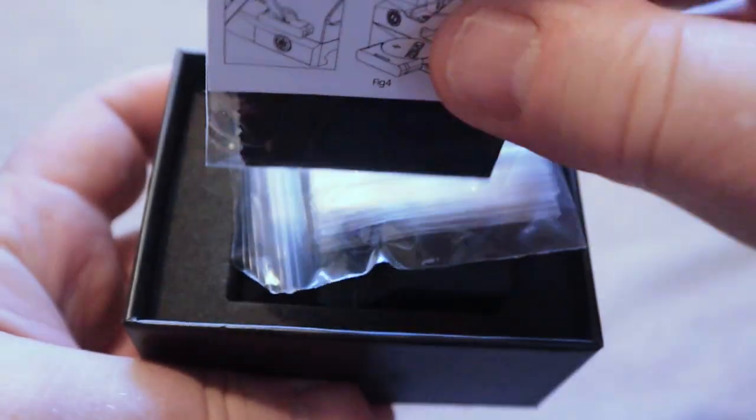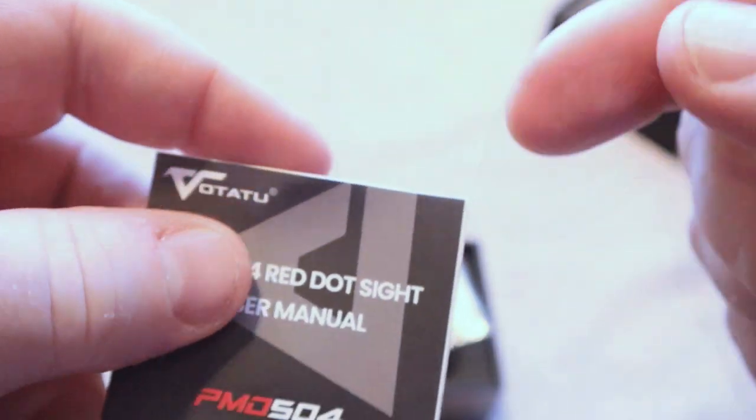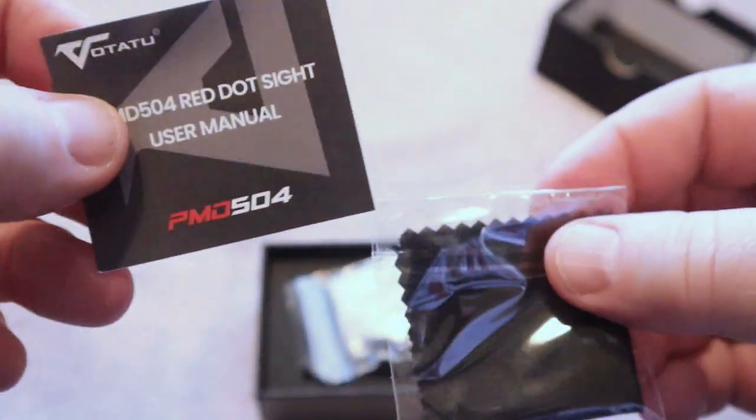We have our literature here that gives you a little bit of information about the red dot as far as the adjustments, things like that. You can see here, and guys, I'm going to put a link down in the description of this video to where you can go over to Amazon and check the current pricing.